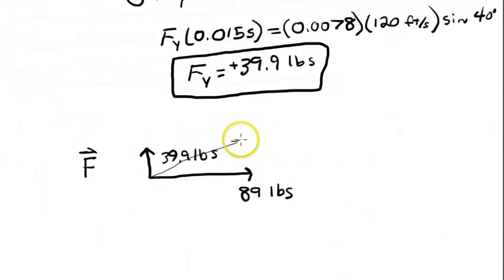And force is going to be something like this where the sides of the triangle are 39.9 this way, 89 there. We can calculate the complete magnitude of the force and that would be 39.9 squared plus 89 squared and take the square root of that.